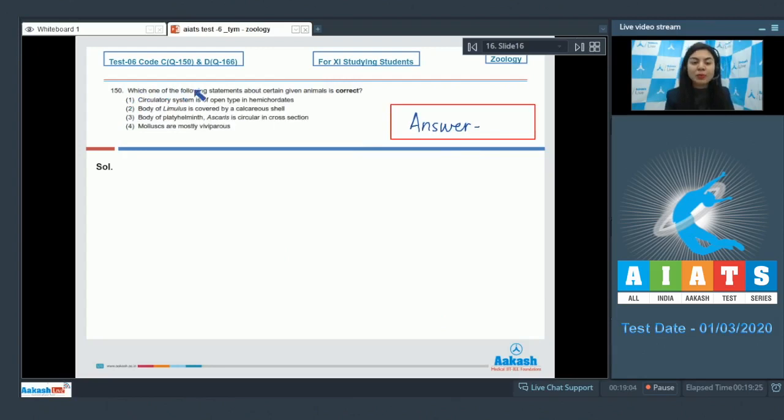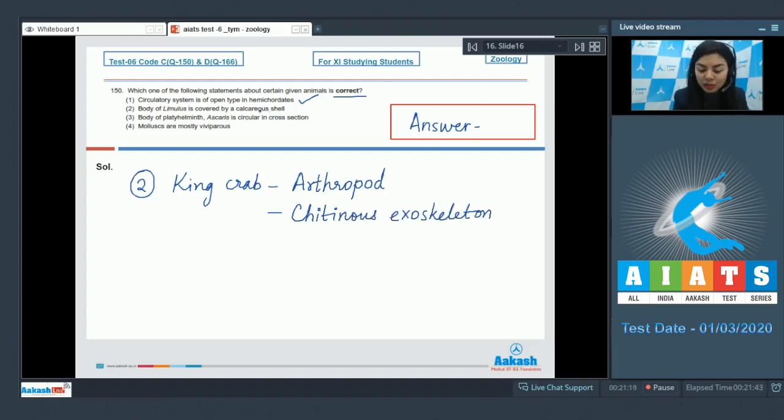Question 150. Which one of the following statements about certain given animals is correct? Let's go over the options one by one. One: circulatory system is of open type in hemichordates. This is a right statement, hence is our answer. Option number two reads: body of Limulus is covered by a calcareous shell. Limulus is king crab. It is a living fossil and a member of phylum Arthropoda. The body of Limulus is covered by chitinous exoskeleton and not by calcareous shell. This is incorrect.